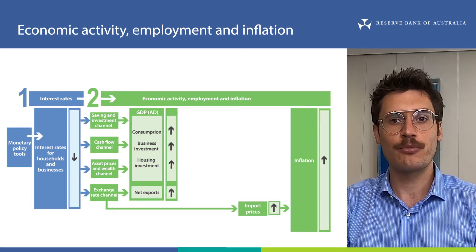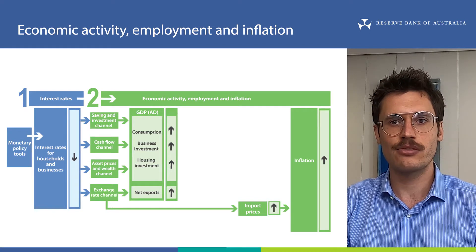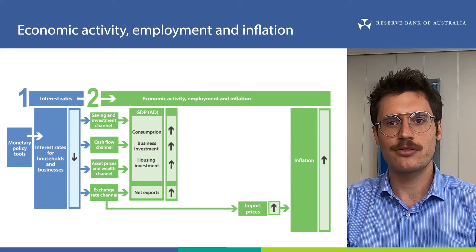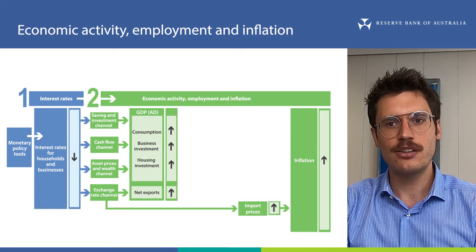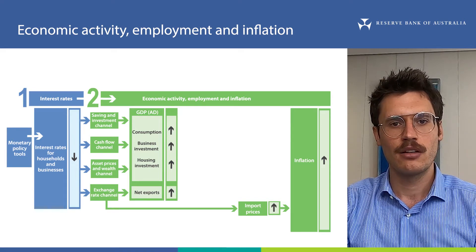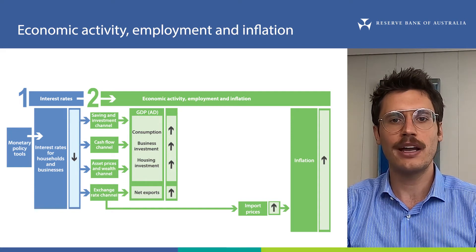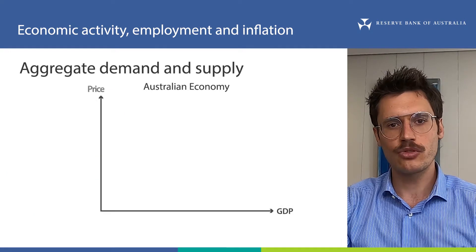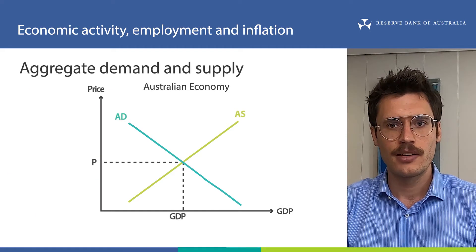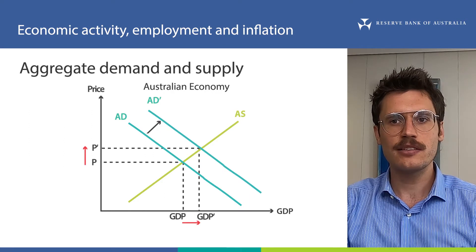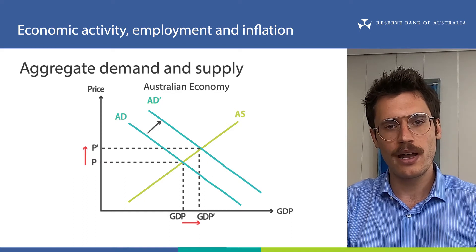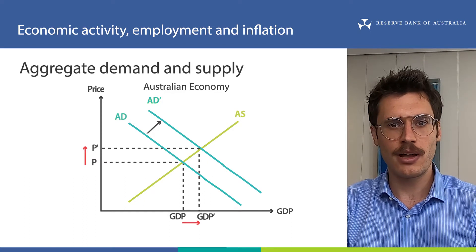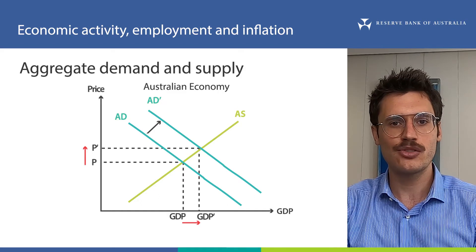Let's continue with our example from the previous video of a decrease in interest rates. This would occur if the RBA eased monetary policy, say by reducing the target for the cash rate. A decrease in interest rates leads to an increase in aggregate demand through higher spending on consumption and business and housing investment, and also through higher net exports. Let's draw this on a demand and supply diagram. To meet this increase in aggregate demand, businesses will have to increase production to supply these goods and services. The point where aggregate demand and aggregate supply meet is called economic activity and is measured by GDP.